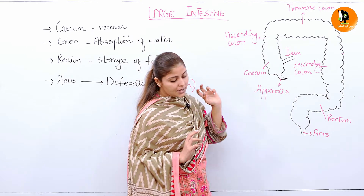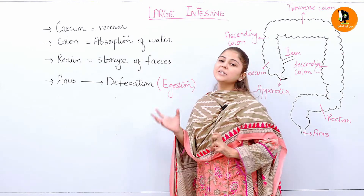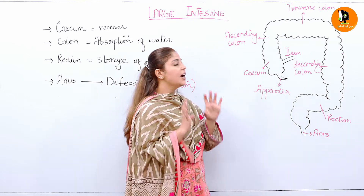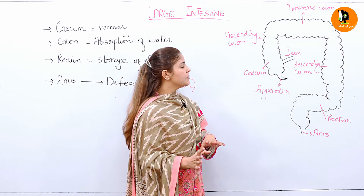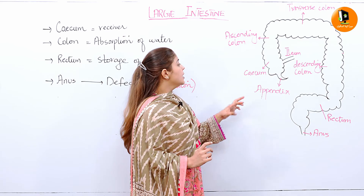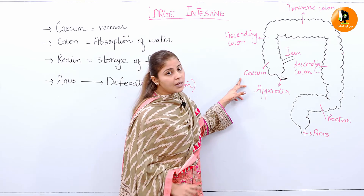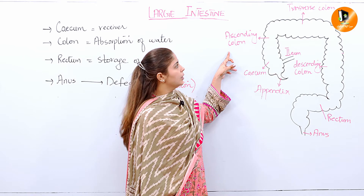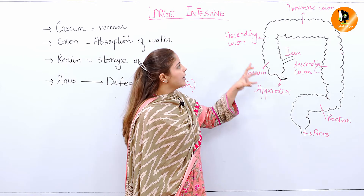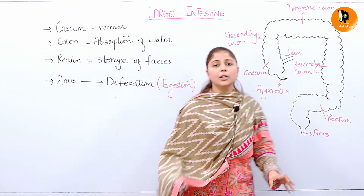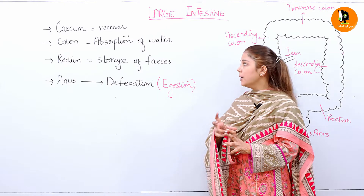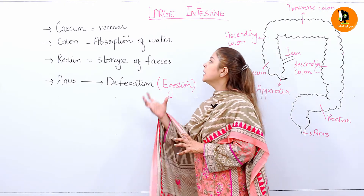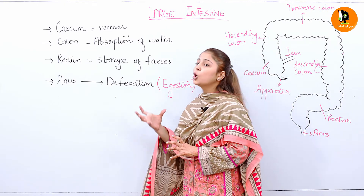In the cecum, what will happen? It acts as a receiver — yeh sirf receive karta hai undigested food ko from the small intestine. Now the cecum will pass this undigested food into the ascending colon, then the transverse colon and descending colon. Collectively, what are they doing? They are absorbing the water.